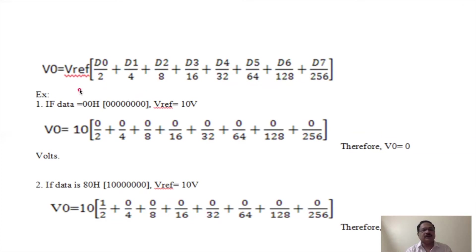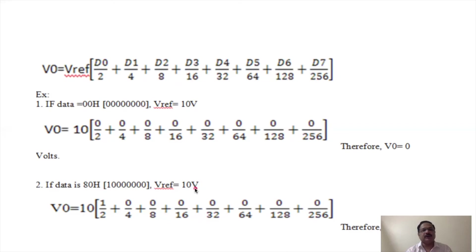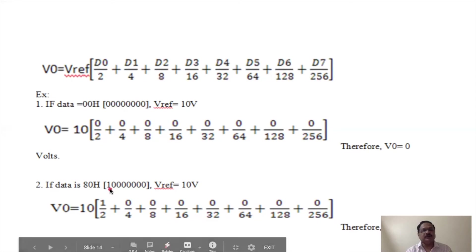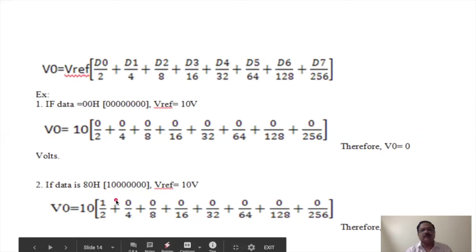For example, if the digital input data is all zeros and the reference voltage is 10V, the output voltage is 0V. In another example, if the data is 80h (hexadecimal), meaning only the MSB bit is 1, and reference voltage is 10V, note there was a correction: D0 is the LSB and D7 is the MSB, so the output voltage is 10 × (1/2) = 5V.